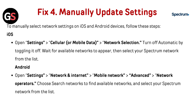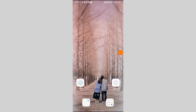Fix 4: Manually update network settings. To manually select network settings on iOS and Android, follow these steps. For iOS: Open Settings, go to Cellular or Mobile Data, then Network Selection. Turn off Automatic by toggling it off. Wait for available networks to appear, then select your Spectrum network from the list.